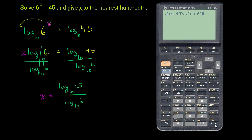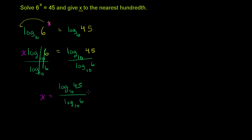And that gets us 2.12. So we want to round to the nearest hundredth. The thousandth place is less than 5, so it's 2.12. So this is approximately equal to 2.12.